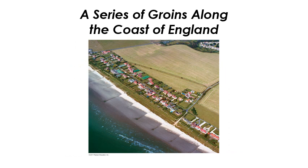If longshore drift takes sand away from your beach, you can build a groin — like a jetty but just one projection sticking out to stop sand. If the longshore drift is going this way, your beach will start growing. But just like a jetty, your neighbor's beach will start eroding because the clean water that refracts around will wear out their beach. Then your neighbor has to build a groin, and their neighbor has to build one, and so on — a situation that requires constant maintenance.